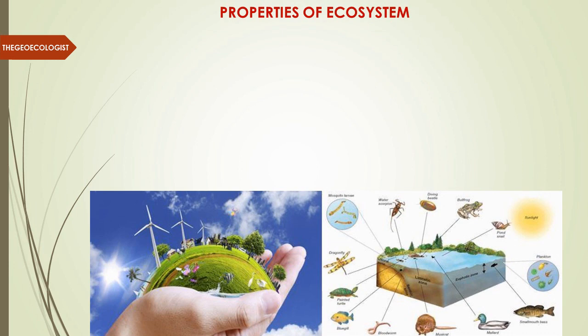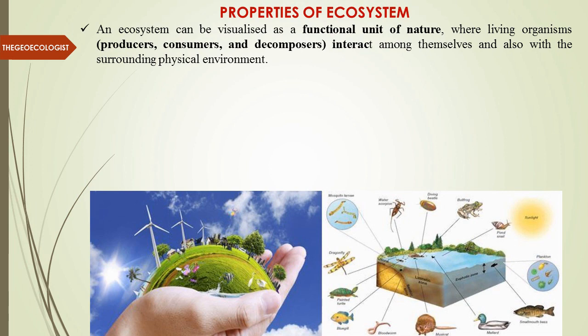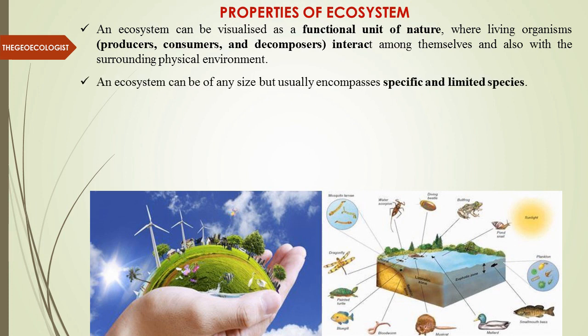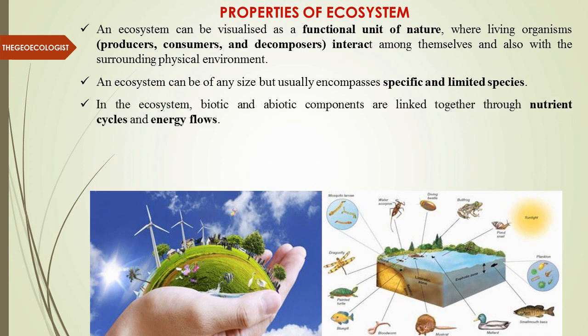Let's look at the properties of ecosystem. The first important point is that it is the functional unit of nature, where living organisms like producers, consumers, and decomposers interact among themselves and also with the surrounding. It is not very specific in size — it can be narrow and wide as well. In the ecosystem, biotic and abiotic — living and non-living — are linked together through nutrient cycles and energy flows, as in biogeochemical cycles.